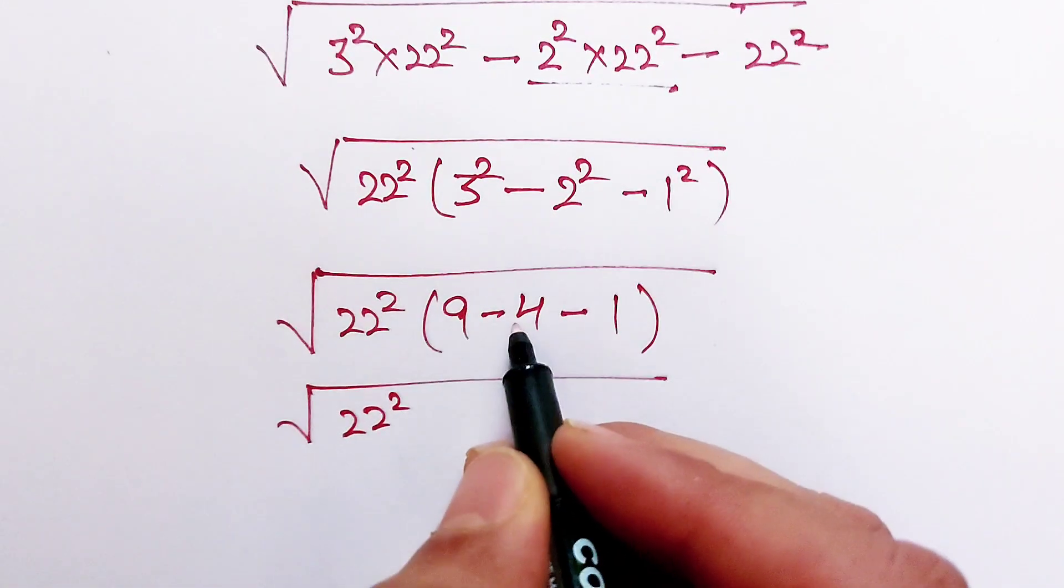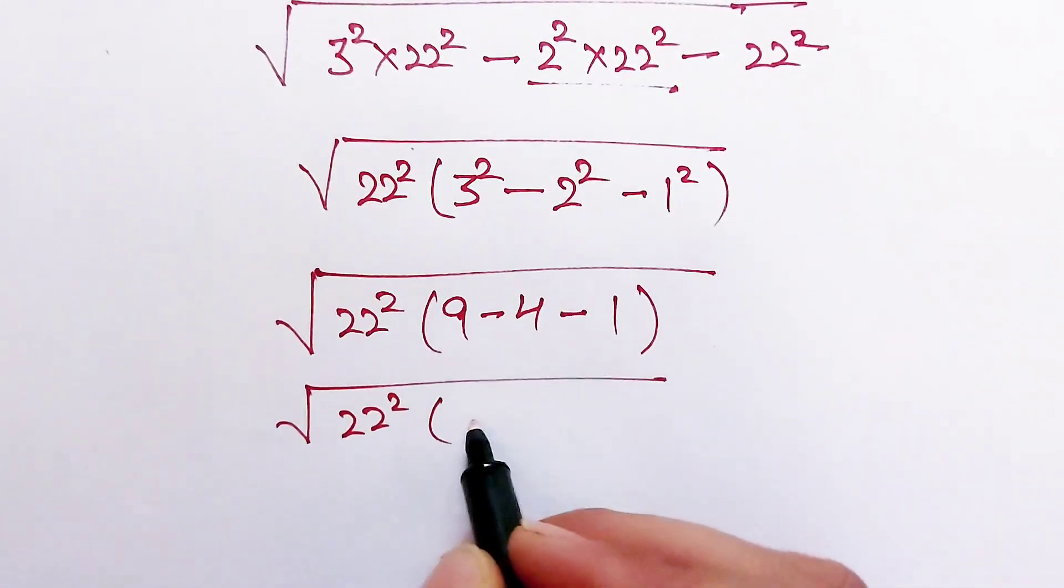22 squared, 9 minus 4 minus 1 equal to 4.